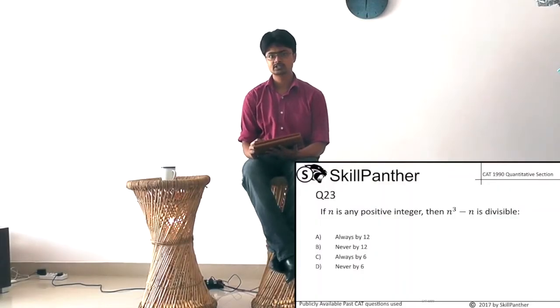Moving on to the next question, question number 23. If n is any positive integer, then n³-n is divisible by. Notice n³-n, let's take out factors. Because each number is a certain type of a number and you can tell what becomes compulsory. So for example, let's take n³-n. If you take out n out of it, that's n(n²-1). Which itself can be broken up into n+1 and n-1. So effectively, n³-n is equal to n(n+1)(n-1).